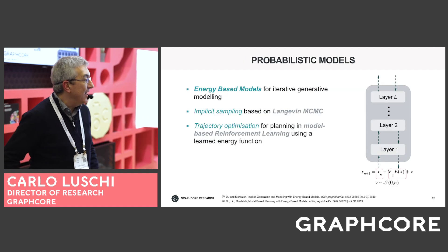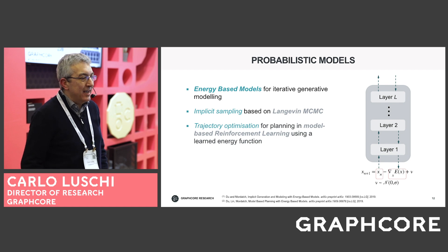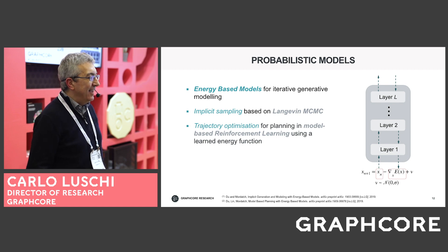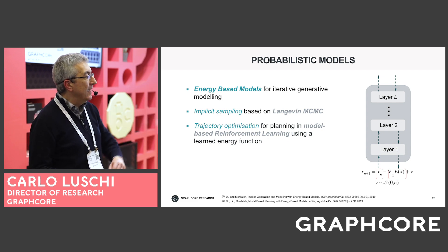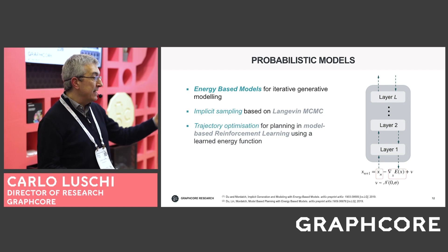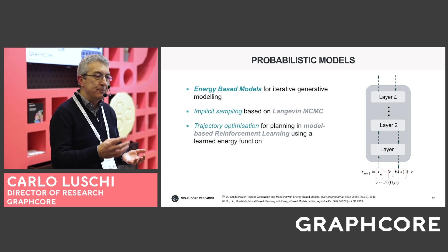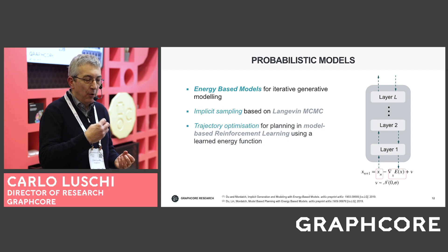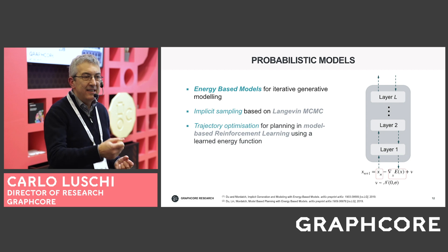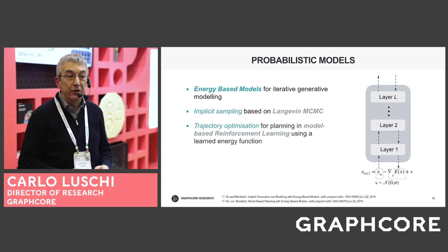One direction we are particularly interested in — not entirely new, having roots in Boltzmann machines — is energy-based models. These have recently been recognized as very effective generative models that perform implicit sampling. When used as the model in model-based reinforcement learning, they have been shown to correspond to maximum entropy reinforcement learning, which offers a significant advantage by trading off an aggressive estimation objective with the ability to estimate alternative solutions, giving a broader range of opportunities in reinforcement learning.